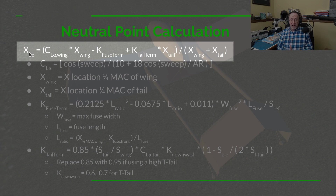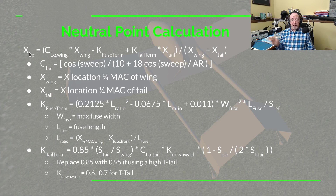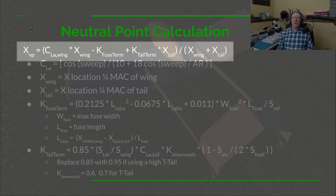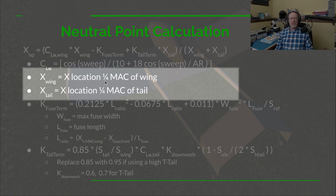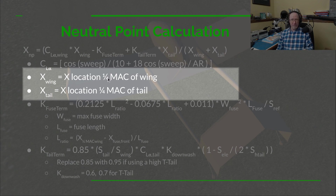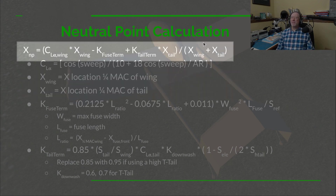For the UWS4, since it's a pusher configuration, I'm using the very front of the fuselage as the zero point, with numbers on the x-axis increasing going back toward the tail. We're also using X for the wing and X for the tail: X_wing is the location of the quarter-chord mean aerodynamic chord of the wing, and X_tail is the quarter-chord mean aerodynamic chord location of the tail. Those values get plugged into the equation.